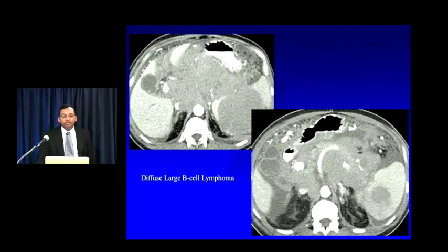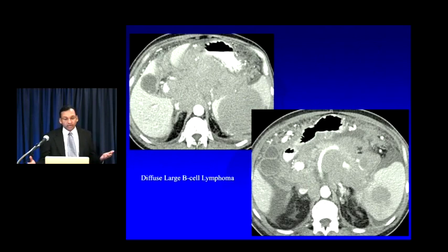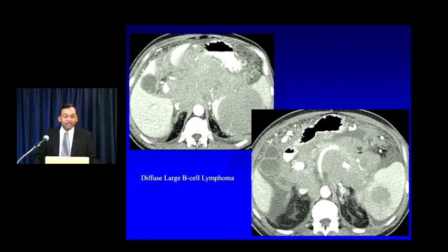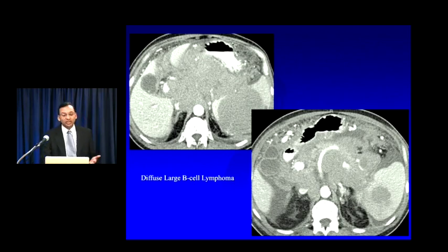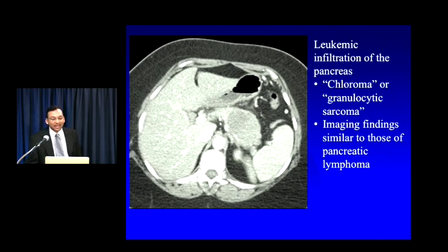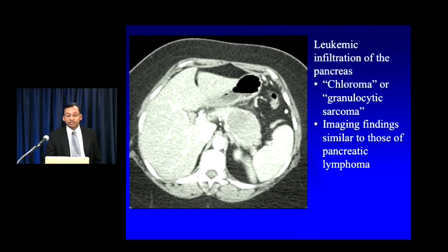Here's an example of a big mass surrounding the entire pancreas — easy to think it's pancreatic cancer, but it's involving multiple organs, encasing vessels with the SMA and splenic artery passing through completely unimpeded and unattenuated, massive lymphadenopathy, and a big splenic mass. This is diffuse large B-cell lymphoma. Leukemia in its focal form — so-called chloroma or granulocytic sarcoma — can look identical to lymphoma, and can rarely cause leukemic infiltration of the pancreas. Here's an example of a big hypodense mass in the pancreatic body-tail that turned out to be a chloroma.